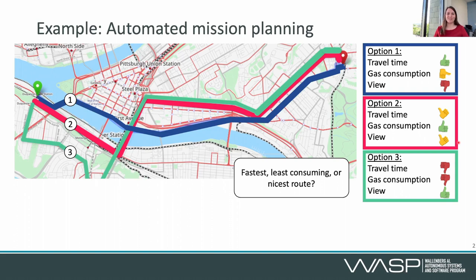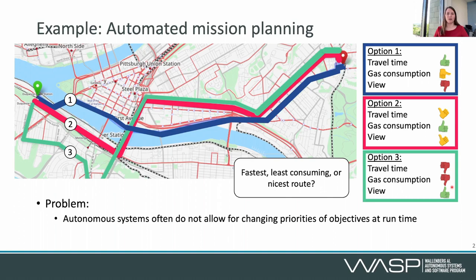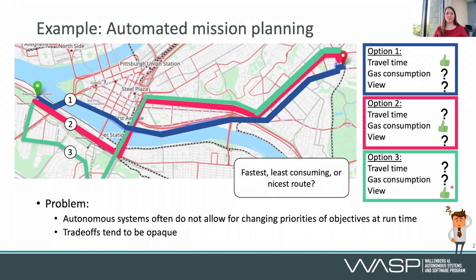But in some situations, having fixed priorities is not what you want. When you're on vacation, maybe you want to prioritize the view more than usual, because you want the nice and scenic route. One of the problems that these systems have today is that they often do not allow for changing priorities of objectives at runtime. Similarly, when you have Google Maps or other such systems, a lot of the time you can see different options, but it's unclear what the trade-offs are in the background when generating these options — and that is opaque to humans and quite hard to understand.